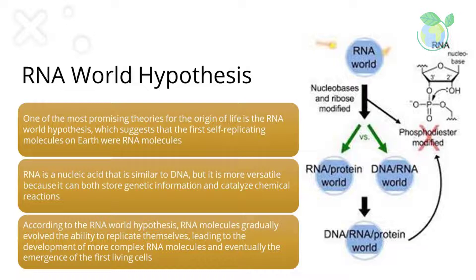According to the RNA world hypothesis, RNA molecules gradually evolved the ability to replicate themselves, leading to the development of more complex RNA molecules and eventually the emergence of the first living cells. This process likely took place over billions of years, with many random chemical reactions and chance events playing a role in shaping the course of evolution.